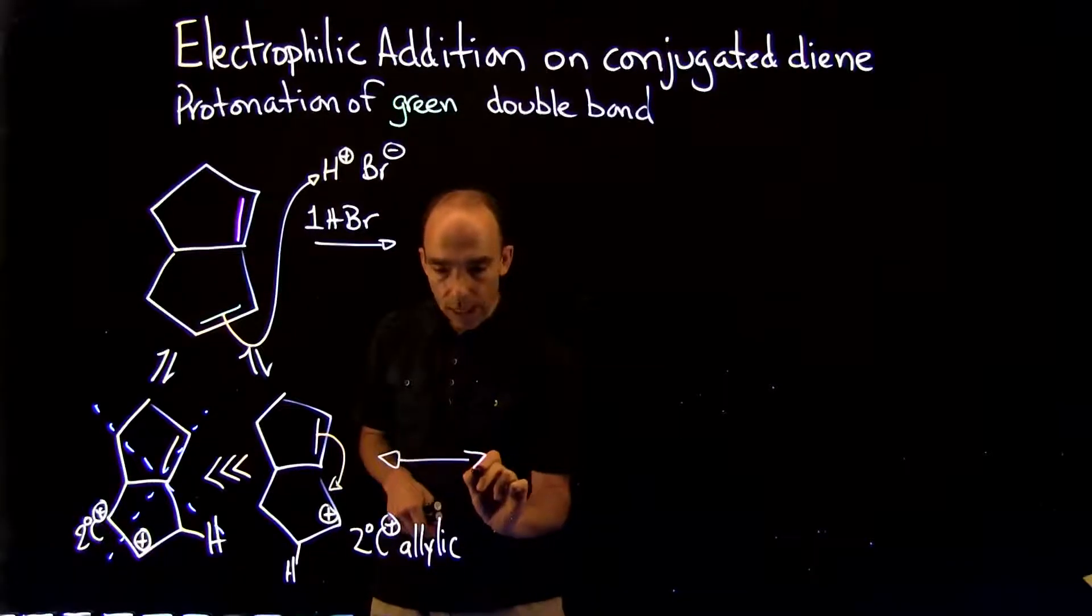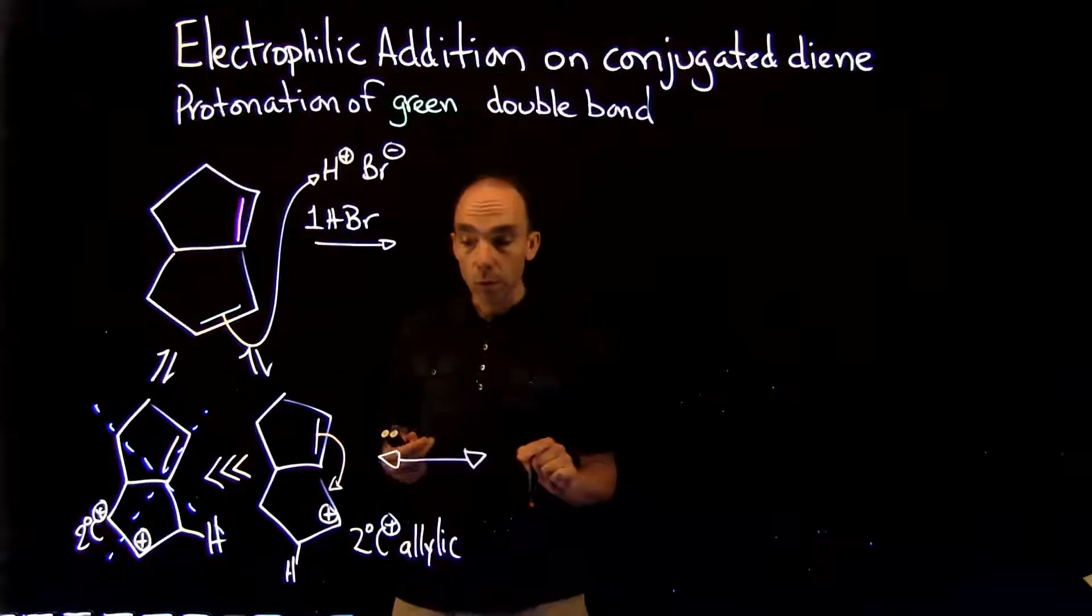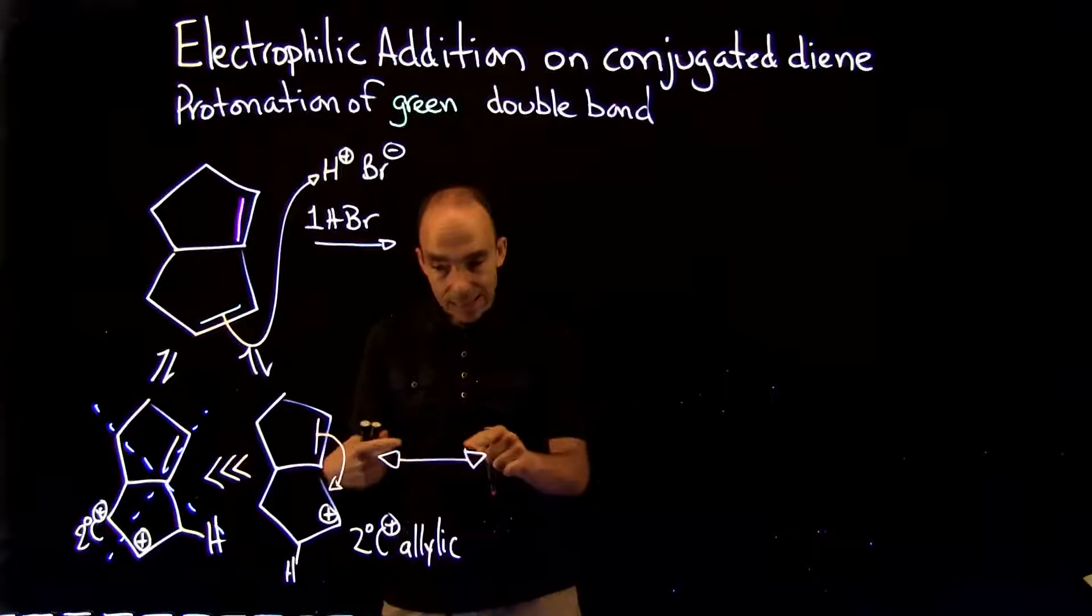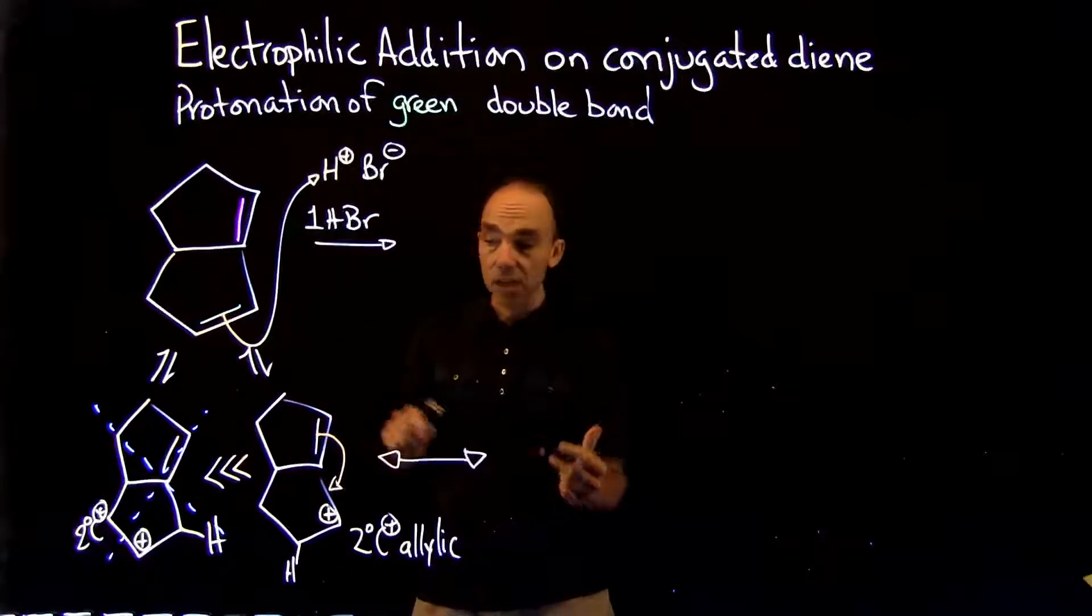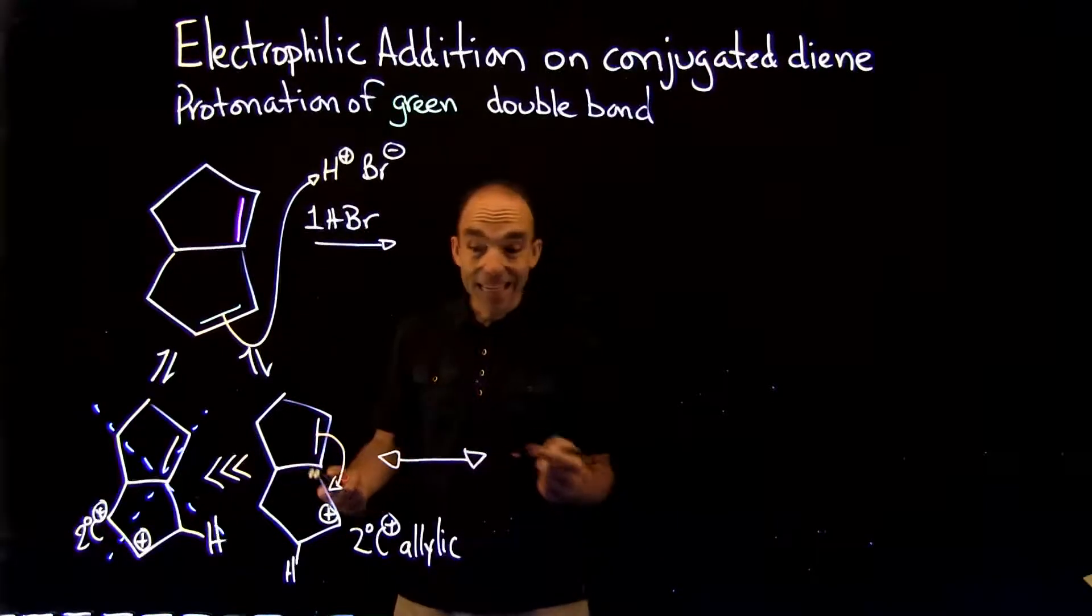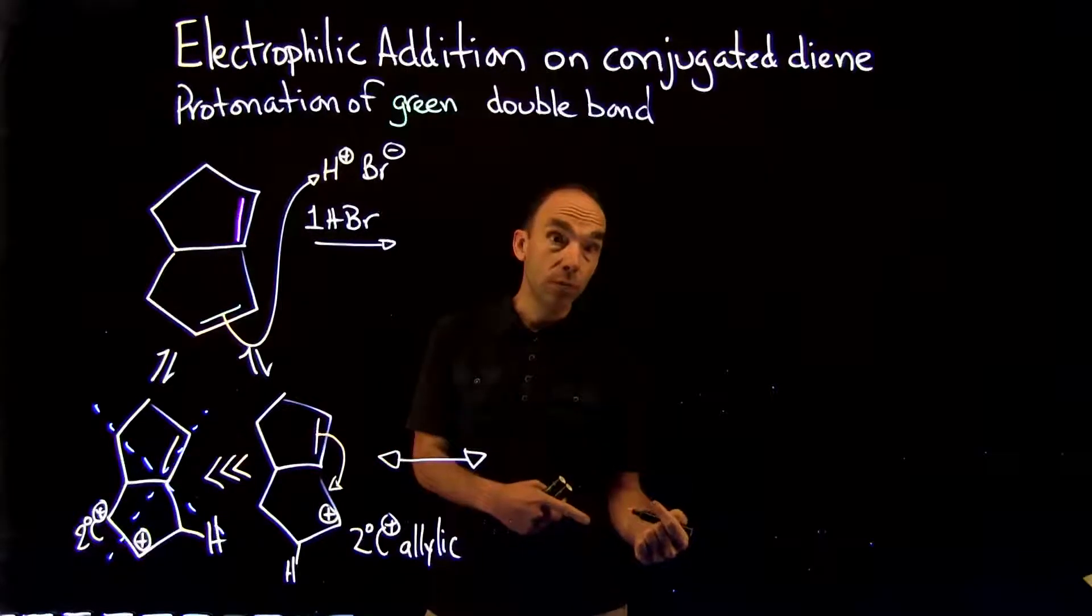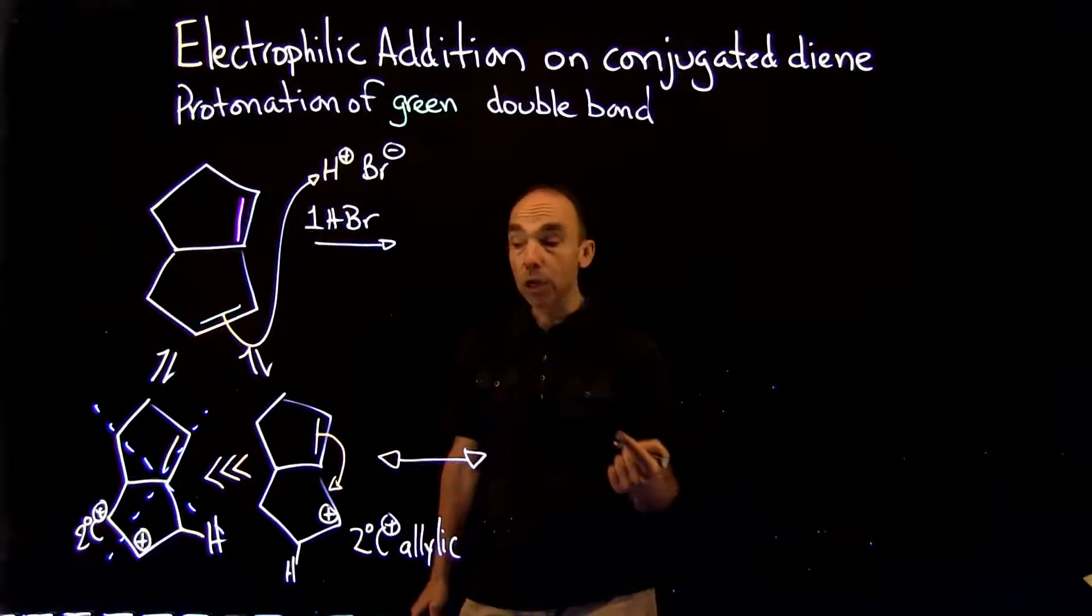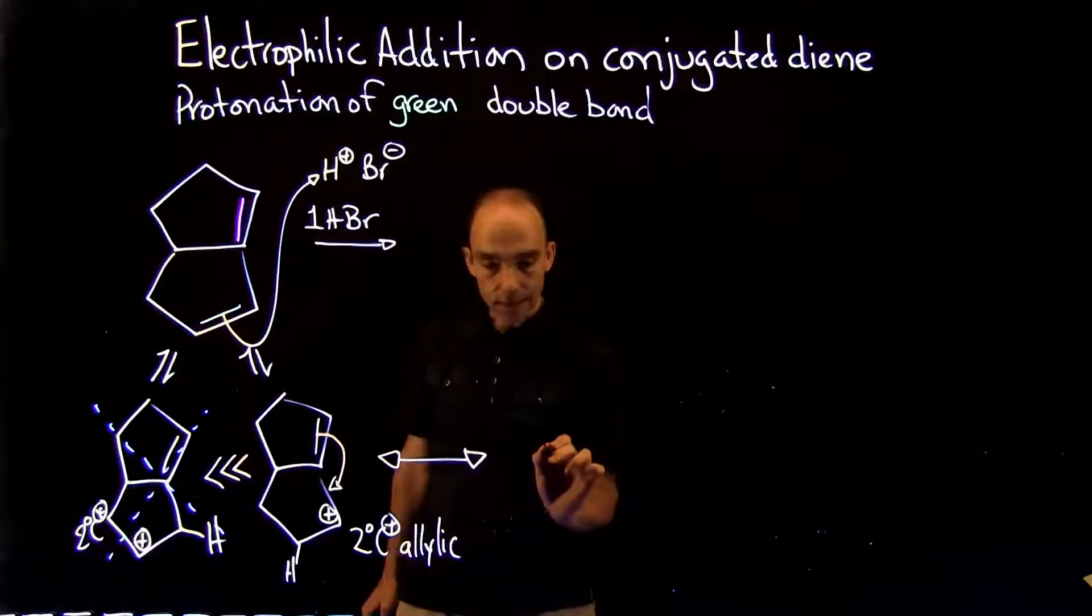That is the way to show that with this set of arrows here, with two heads on the same line, indicating delocalization of electrons, and indicating that we're not writing a different intermediate, we're writing a different representation of that intermediate.